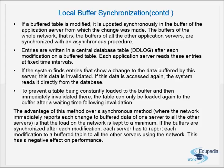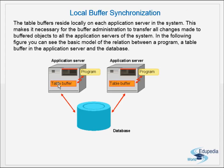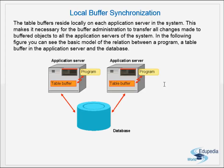For example, consider application server one and two. A program on server one makes some changes to its table buffer. Simultaneously the changes are saved in the database, so the database is always up to date and server one's table buffer is also up to date. However, server two's table buffer still has old data. If the synchronization program runs periodically every two minutes, and the change was made after one minute, then for that remaining minute server two will have only old data.